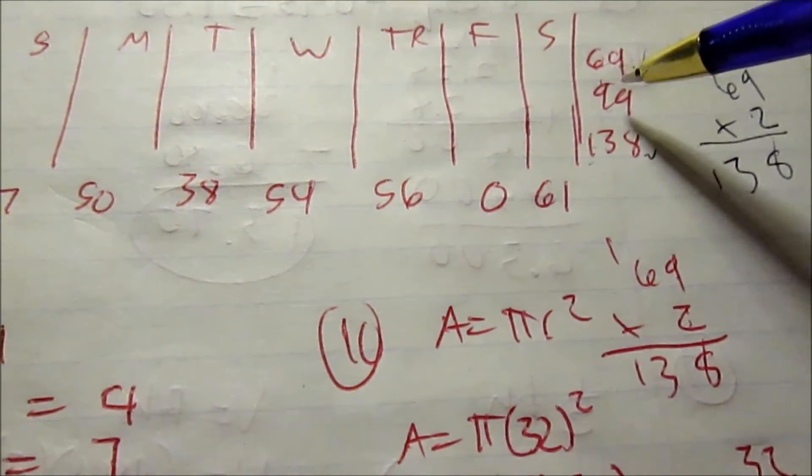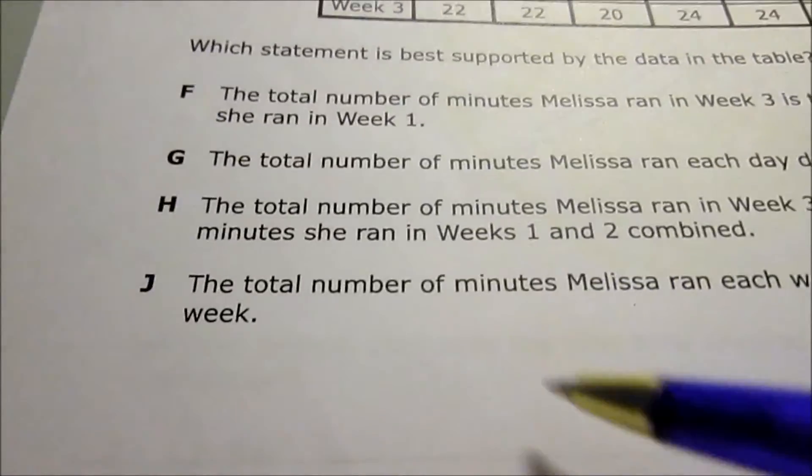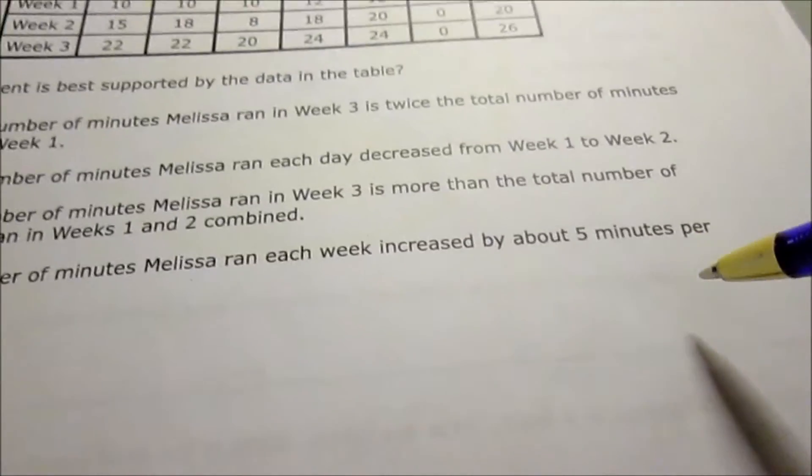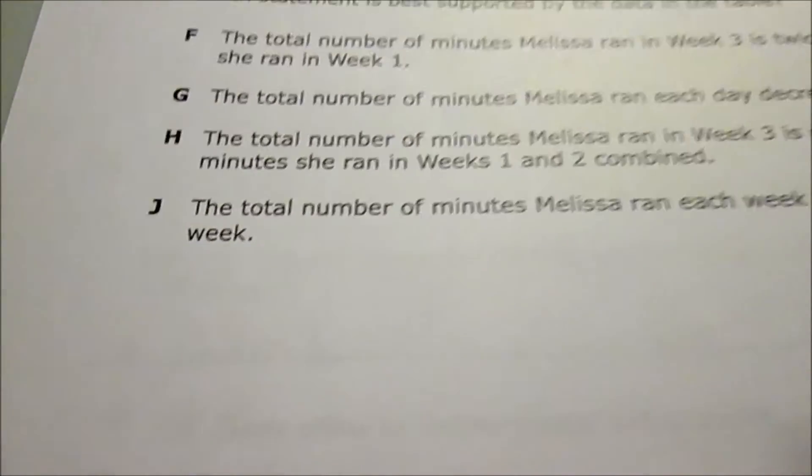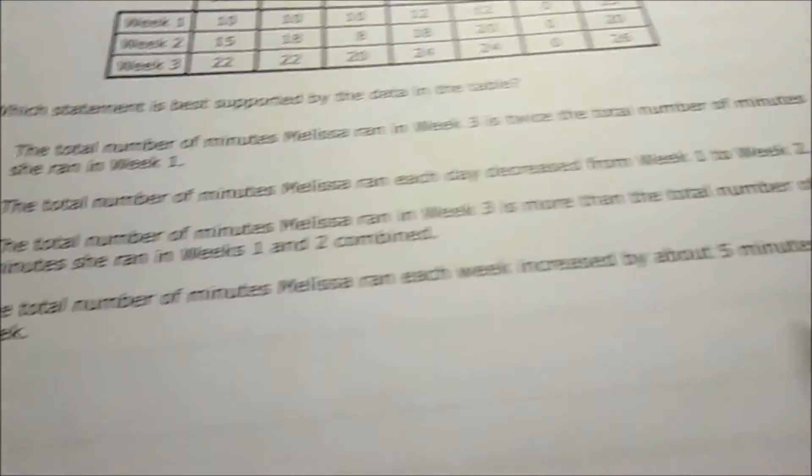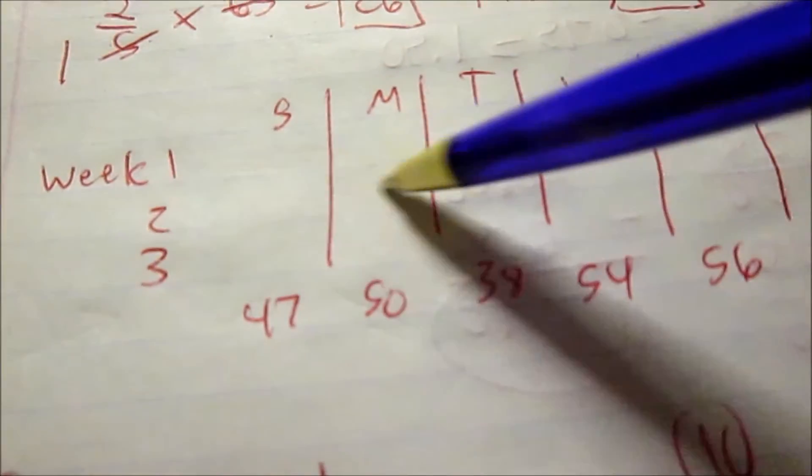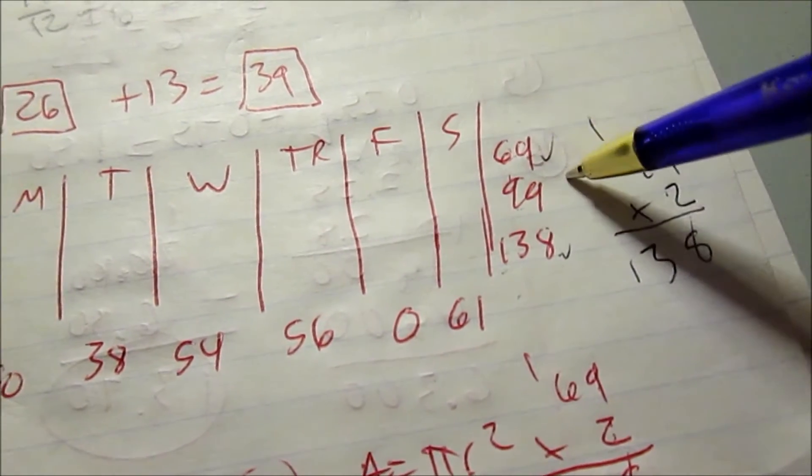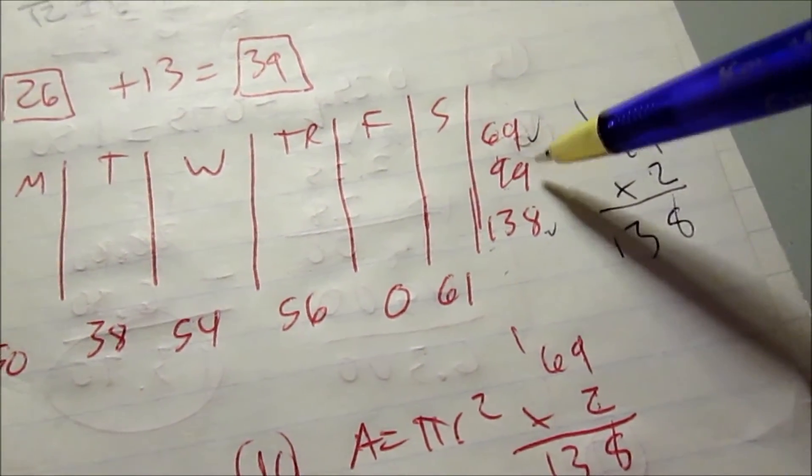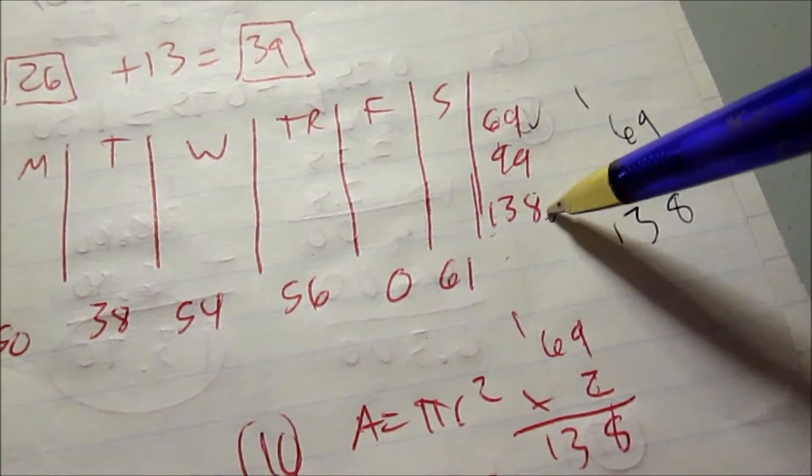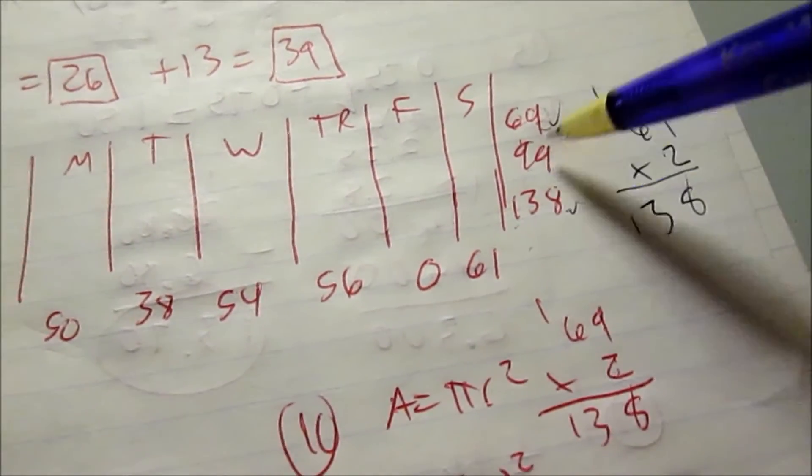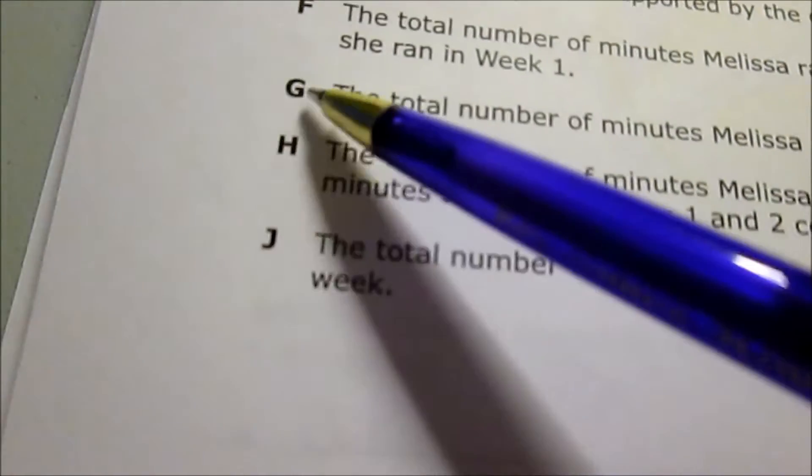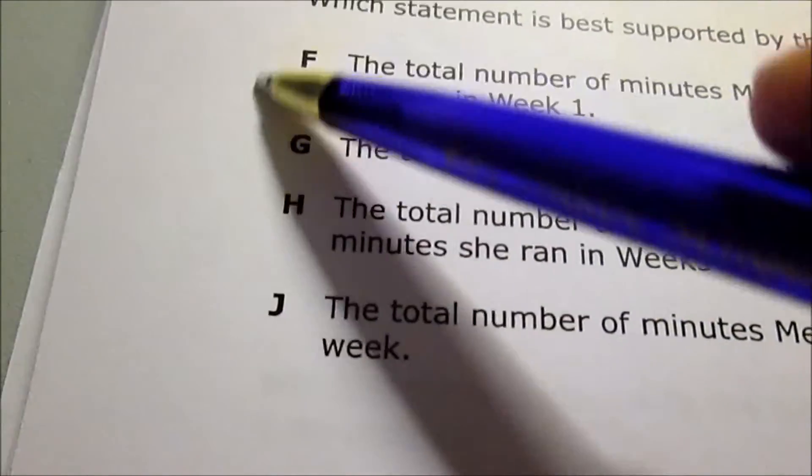J: Total number of minutes Melissa ran each week increased by about five minutes per week. I look at the totals from each week: week one, two, and three going across the rows. It went from 69 to 99, that's not an increase by 5, that's about an increase by 30. Goes up by 30, and here definitely not increase by 5. So J's out. All three below here are incorrect, so F is the correct answer.